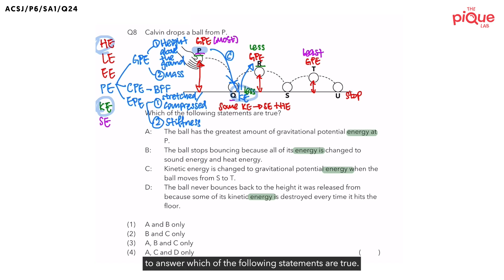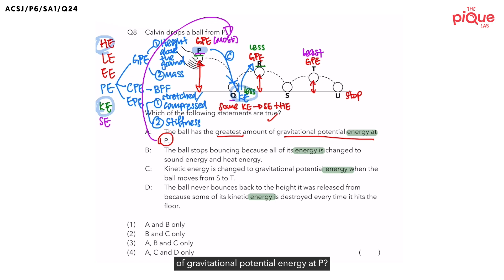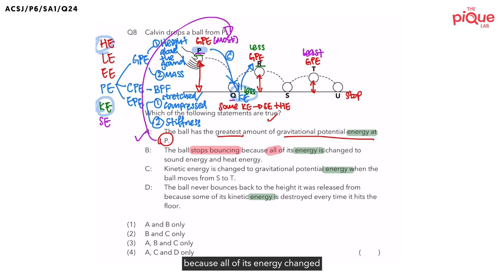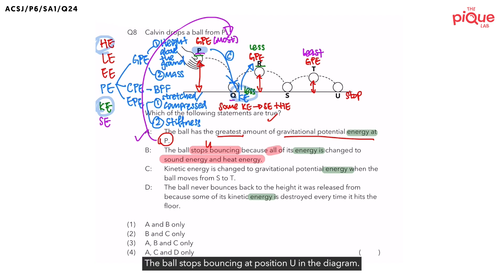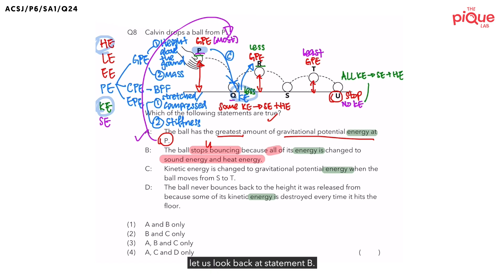Now we can answer which statements are true. Statement A: the ball has the greatest amount of gravitational potential energy at P. From our annotation, yes — the ball possesses the greatest gravitational potential energy at P, so Statement A is correct. Statement B: the ball stops bouncing because all of its energy changed to sound energy and heat energy. The ball stops bouncing at position U. At U, it no longer possesses kinetic energy, meaning all of its kinetic energy has been converted to heat energy and sound energy. So Statement B is also correct.